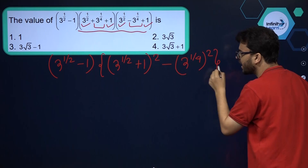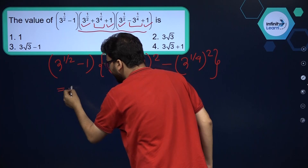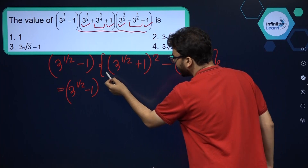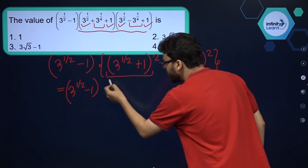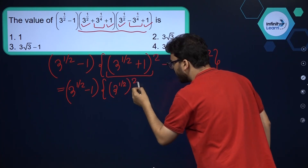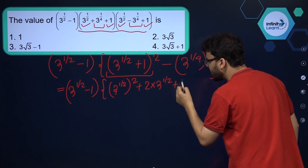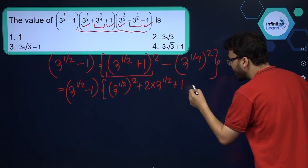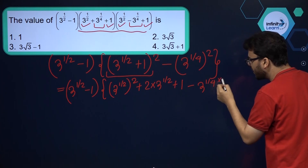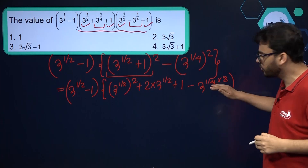Now let's simplify — we have to use laws of exponents. This will remain as 3 raised to the power 1 by 2 minus 1, and over here we use the a plus b whole square formula. This gives us 3 raised to the power 1 by 2 whole square, plus 2 into 3 raised to the power 1 by 2, plus 1 squared, minus 3 raised to the power 1 by 4 whole squared. Power of power gets multiplied — multiplied by 2 — so this gets cancelled out and 3 raised to the power 1 by 2 is left over here.